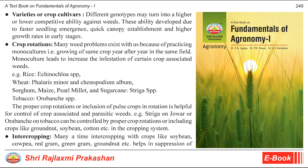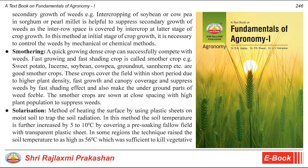Intercropping: many times intercropping with crops like soybean, cowpea, redgram, greengram, groundnut, etc. helps in suppression of secondary growth of weeds. Example: intercropping soybean or cowpea in sorghum or pearl millet is helpful to suppress secondary growth of weeds as the interrow space is covered by the intercrop at a later stage of crop growth. At the initial stage, it is necessary to control weeds by mechanical or chemical methods.